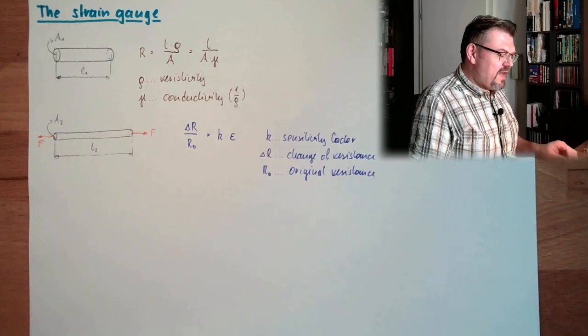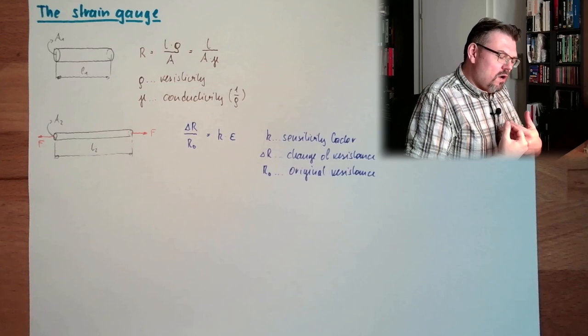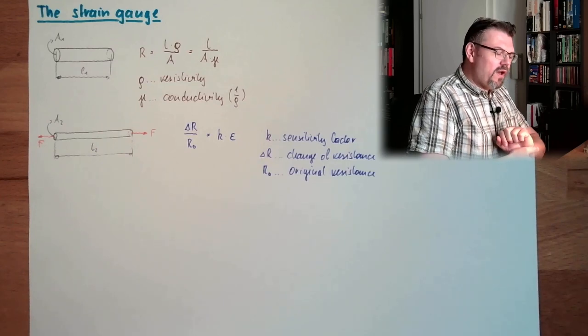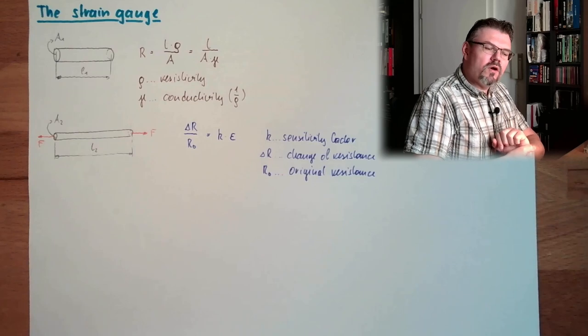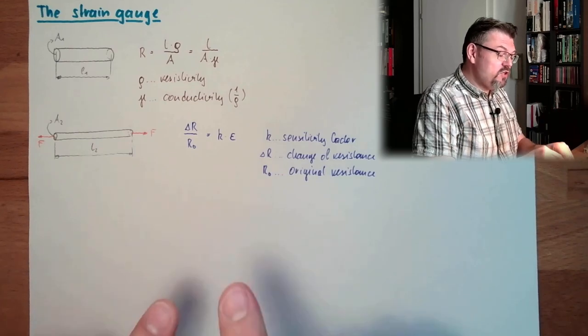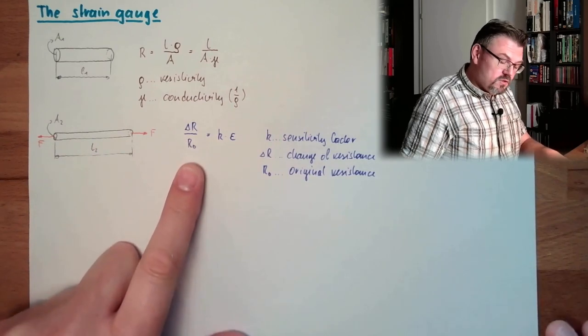This is the resistance. And this R0 is the original resistance. So this K describes how much change that can be applied. If I want to have a good measurement I want to have a big change. I want to have a big change in the resistance. So this K should be as high as possible.